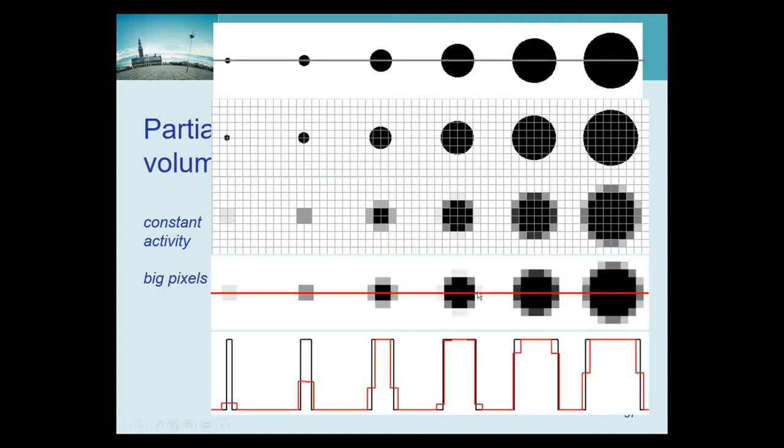And so if we draw a profile, we get the red line, which is the measured line, and the black line is what is the ground truth. And you see that for the big disk, the problem is small, but for the large disk, the problem is very big and we don't see concentration anymore.